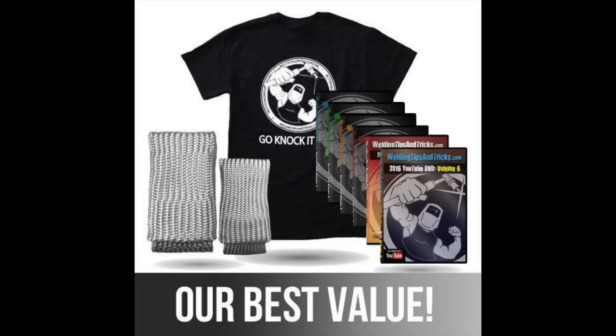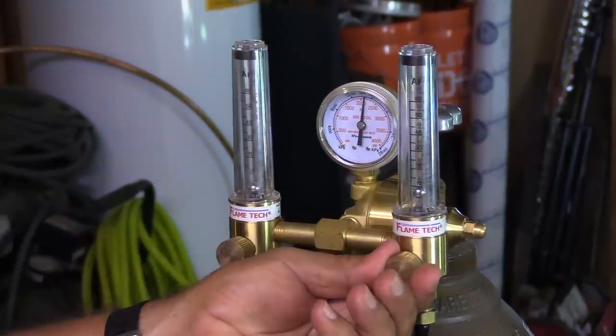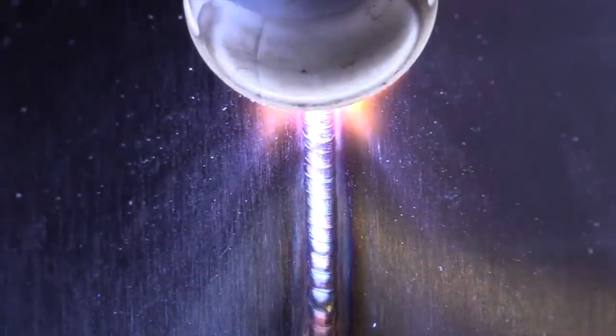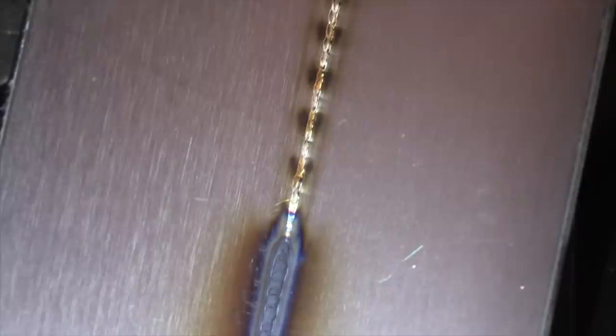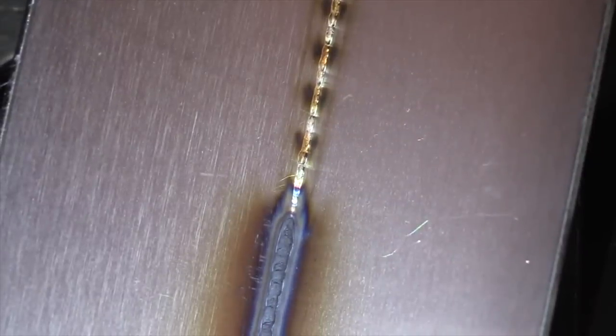You can get this whole DVD set for the past several years as well as a t-shirt, TIG finger, TIG finger XL, a lot cheaper than you can get them individually. One of the more recent products I added is this dual flow meter for when you're doing stainless steel or nickel alloys and you need that purge line. You need that second flow meter.